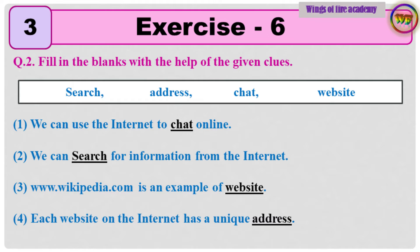Question 2: Fill in the blanks with the help of the given clues. 1. We can use the internet to chat online. 2. We can search for information from the internet. 3. www.wikipedia.com is an example of a website. 4. Each website on the internet has a unique address.